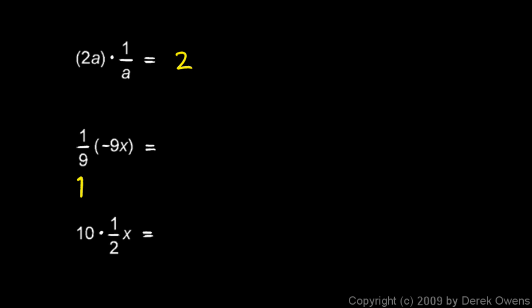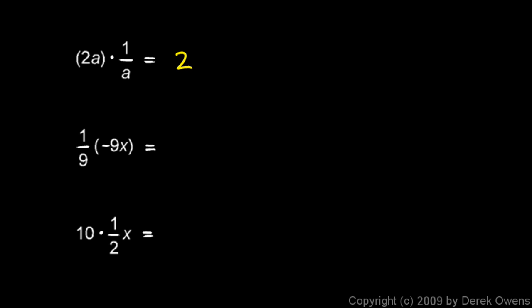Something similar happens with 1 ninth and 9. The 1 ninth times 9 gives 1, and I'm left with the negative and the x. So my answer is negative x. This simplifies pretty easily when you find a number and its reciprocal multiplied together.